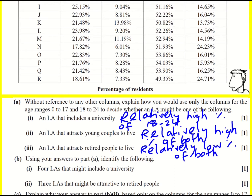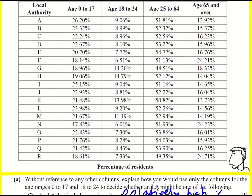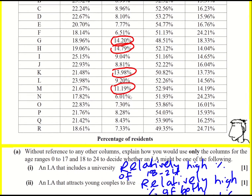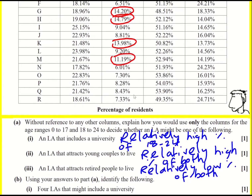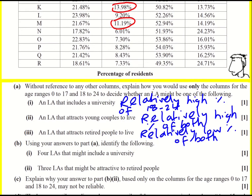We're asked to use our answers to identify four local authorities that might include a university. So focusing on high proportions as we said for 18 to 24: 14% — that's above the typical ones — and these two here as well. Those are the ones that jump out. M as well, because we're asked for four, so that one's in fourth place. So G, H, K and M.